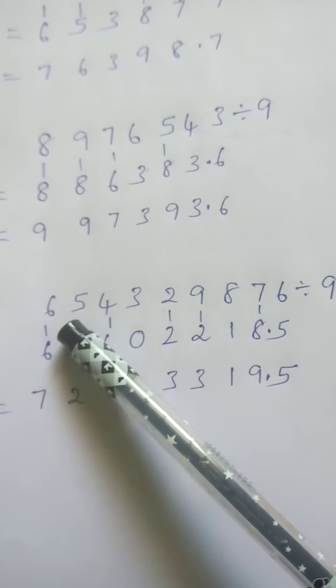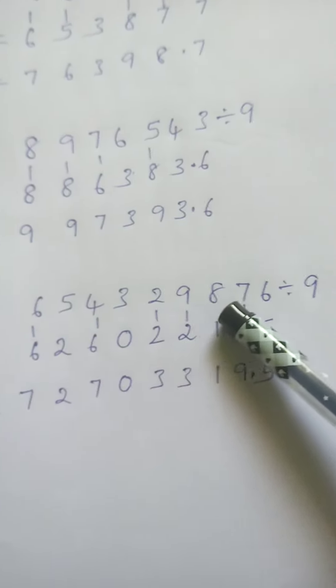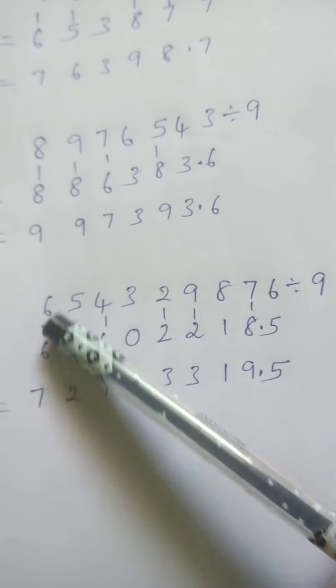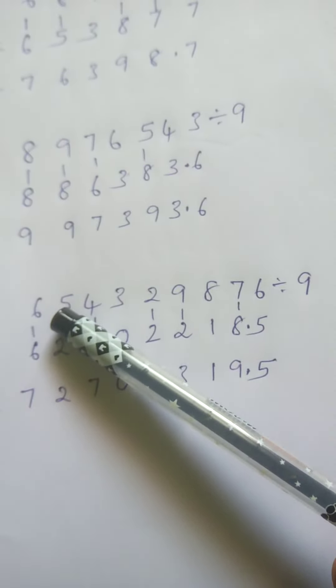Another example: 6 5 4 3 2 9 8 7 6 divided by 9. 6 as it is. 6 plus 5 is 11.